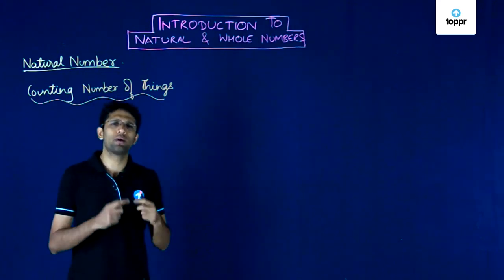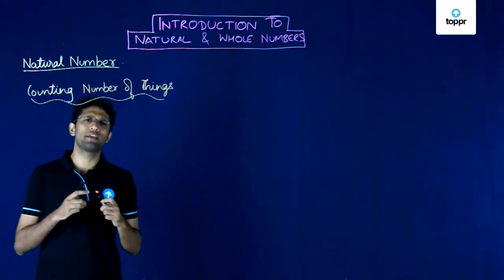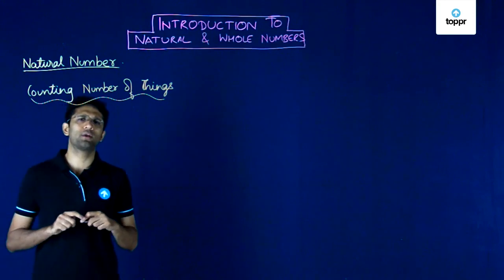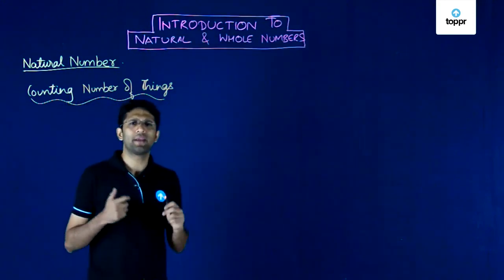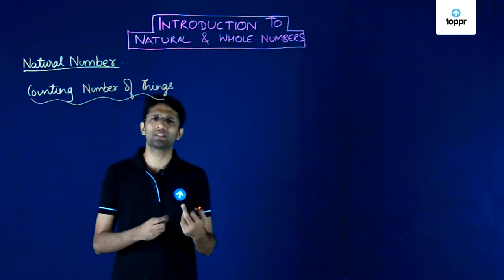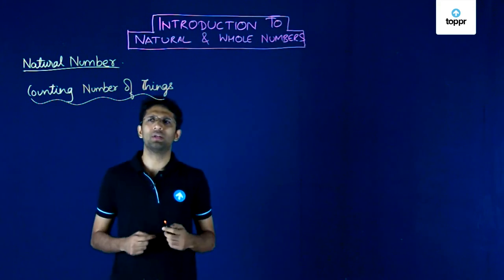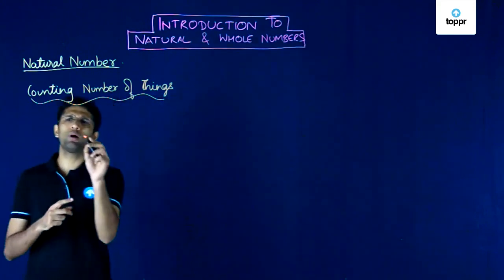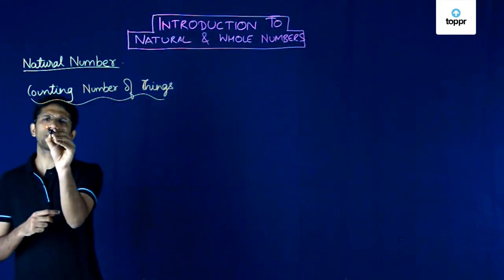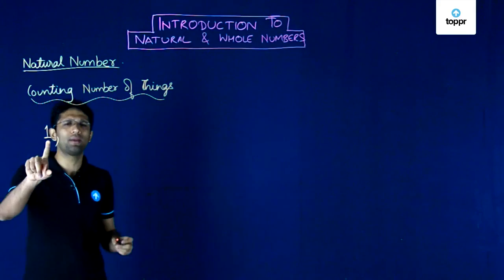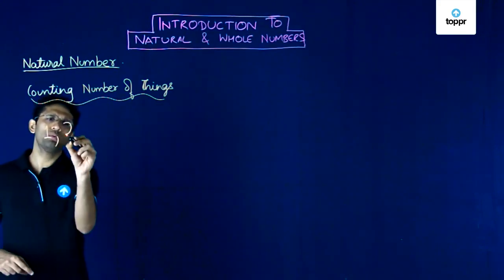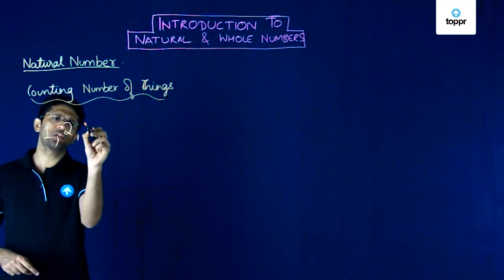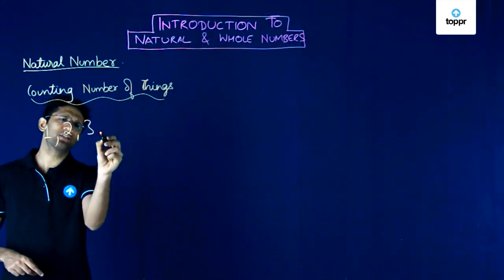For instance, if you talk about the number of persons in a given room, then the room can have one person, it can have two persons, it can have three persons and so on. So if you talk about the number of persons, the number can be one, it can also be two, it can also be three and so on.